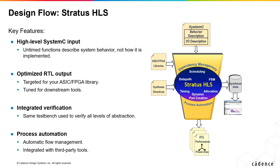Stratus HLS generates an optimized Verilog RTL with the technology library according to the user's specifications. The synthesis directives help generate different architectures for the same SystemC source code. Numerous synthesis directives are available as part of Stratus HLS, allowing users to tweak the behavior without modifying the source code.